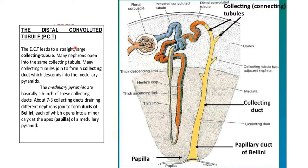The distal convoluted tubule lies as a straight large connecting tubule. Many nephrons open into small connecting tubules, and many connecting tubules join to form a collecting duct which descends into the medullary pyramid. About seven to eight collecting ducts draining different nephrons join to form ducts of Bellini, each of which opens into a minor calyx at the apex of the medullary pyramid.